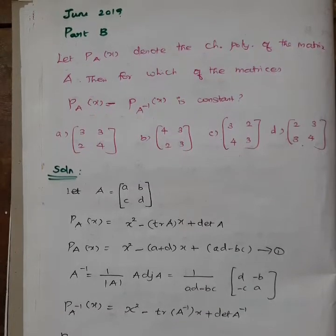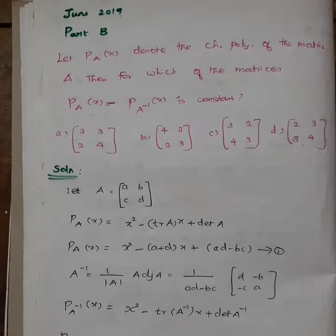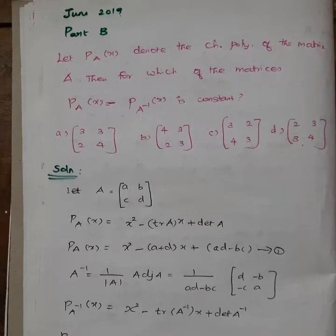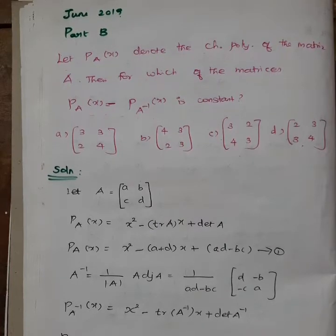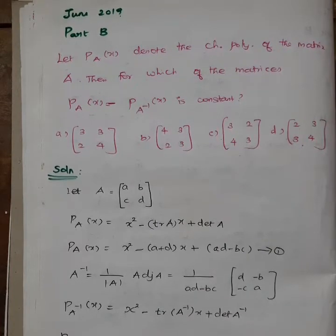We are going to talk about the matrix A inverse. A inverse equals 1 by modulus of A, multiplied by the adjoint of A. We will talk about the characteristics of the matrix — the two polynomials differing by a constant.